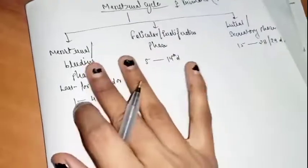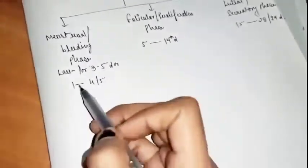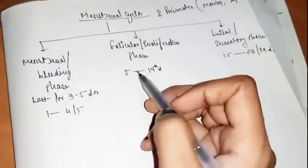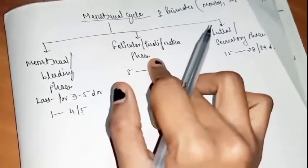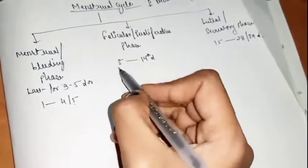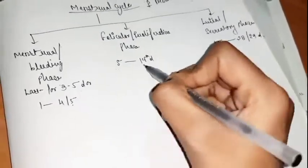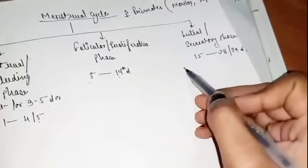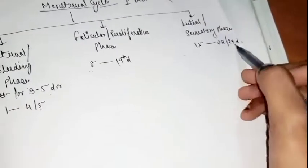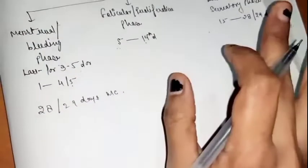The menstrual cycle has three phases. The first phase is called the menstrual phase or bleeding phase, which lasts for 3 to 5 days. It is followed by the follicular or proliferative phase, which is the second phase, occurring from the 5th to the 14th day. The next phase is the luteal or secretory phase, from the 15th to the 28th or 29th day. So the total menstrual cycle is 28 or 29 days.